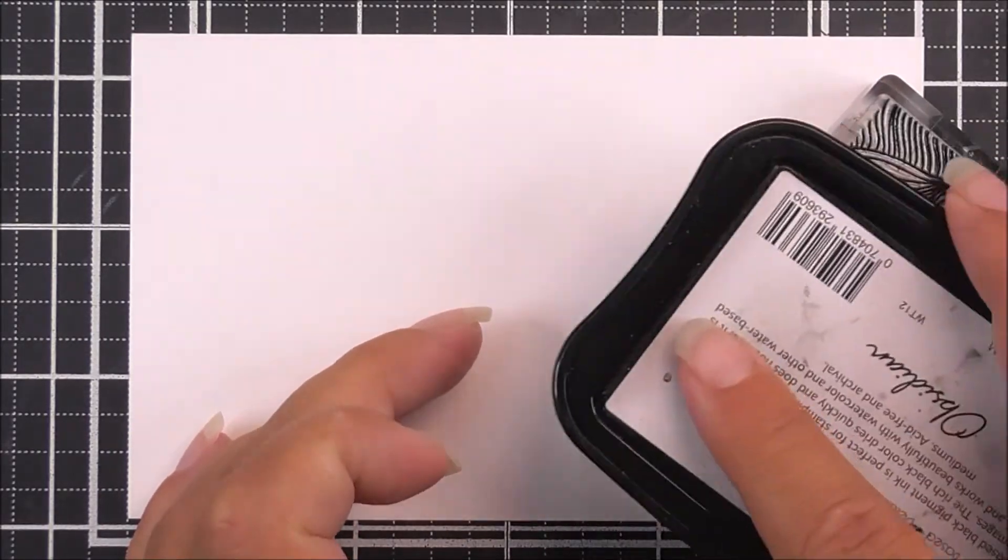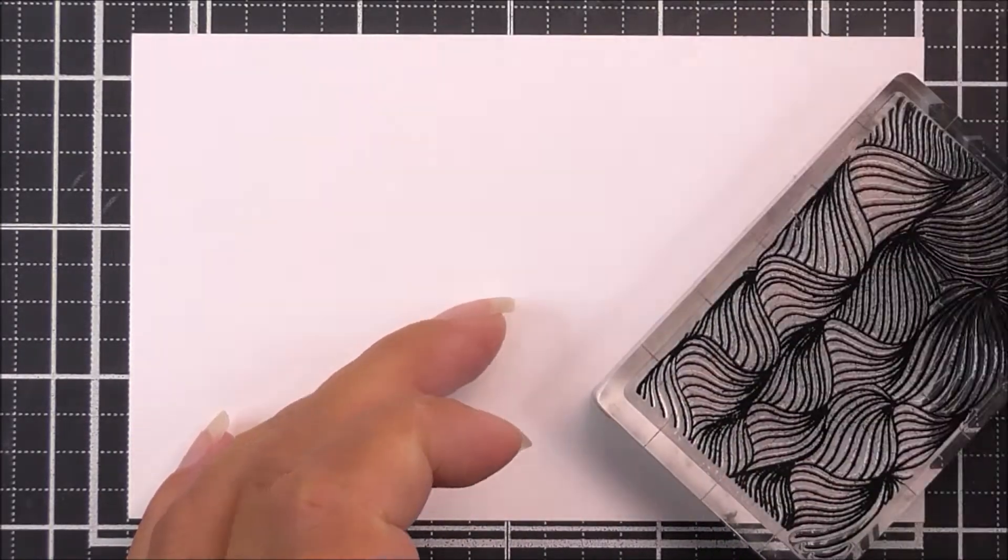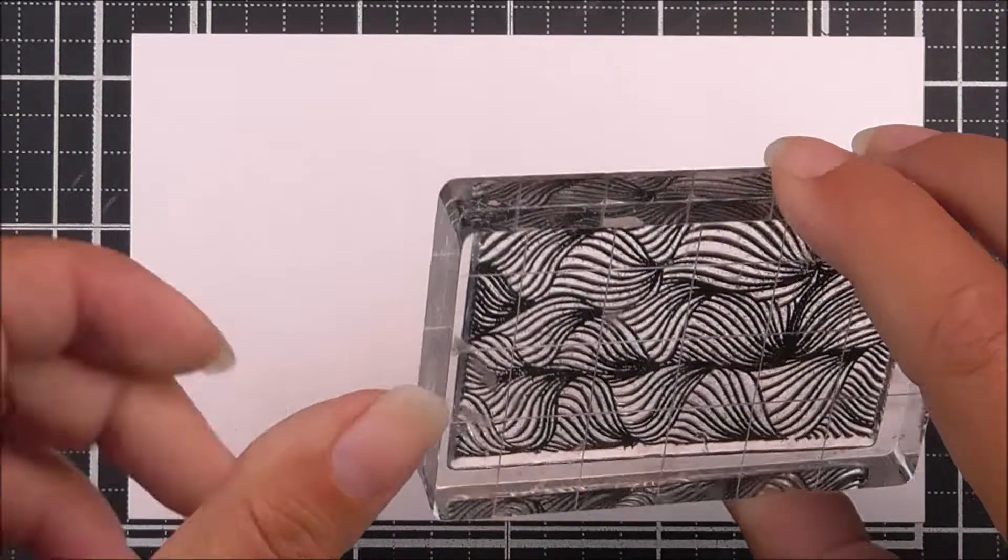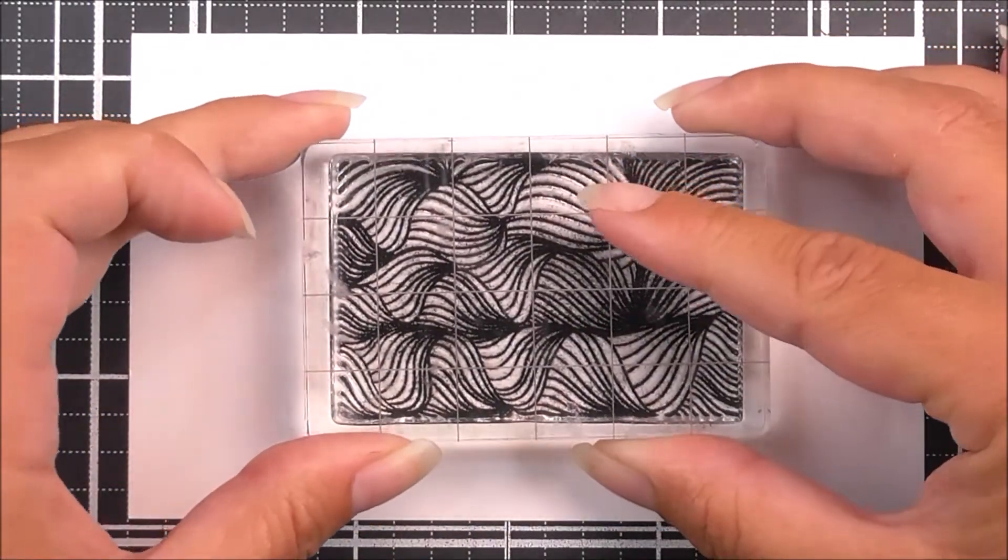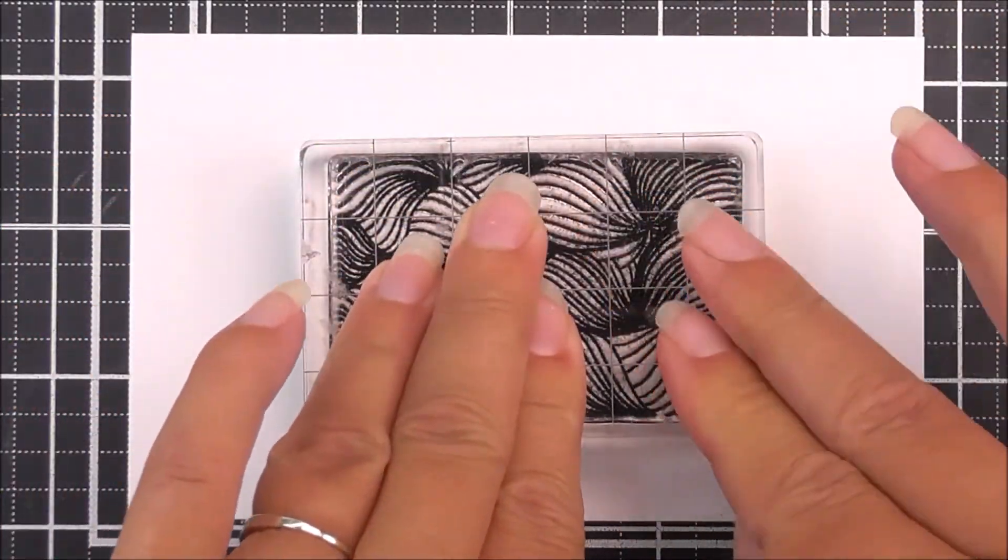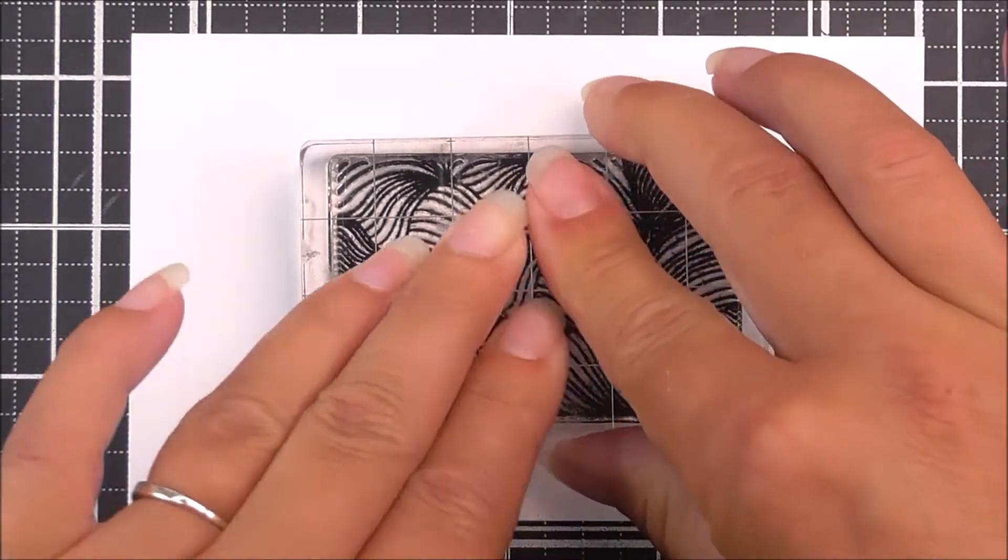Want to stun your loved ones with beautifully decorated projects? This geometric stamp set showcases an awesome texture of flowing lines which can be stamped around a card to form a gorgeous repetitive background design.